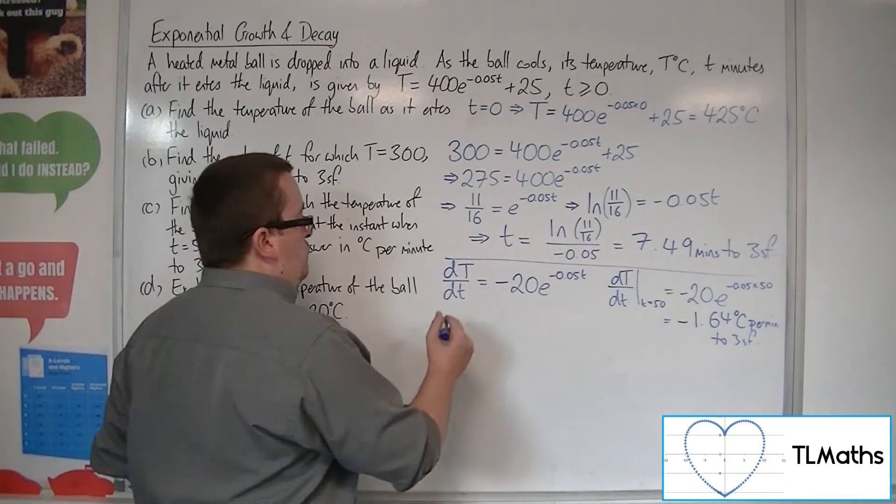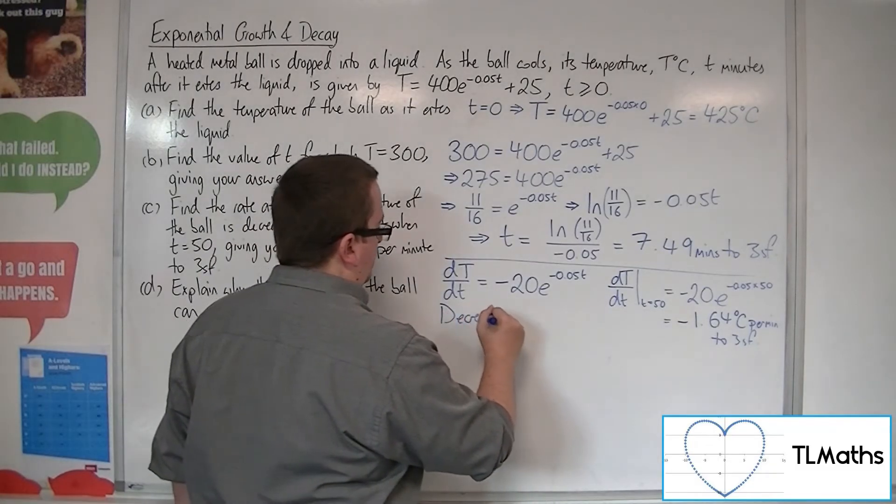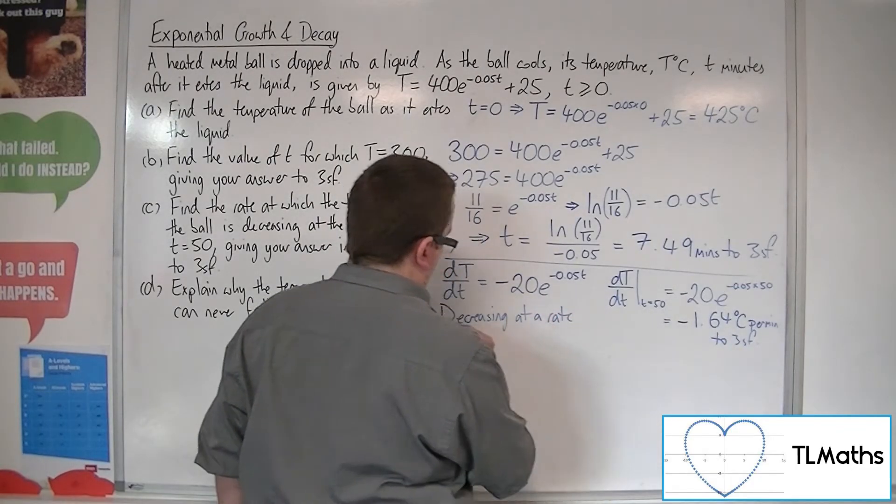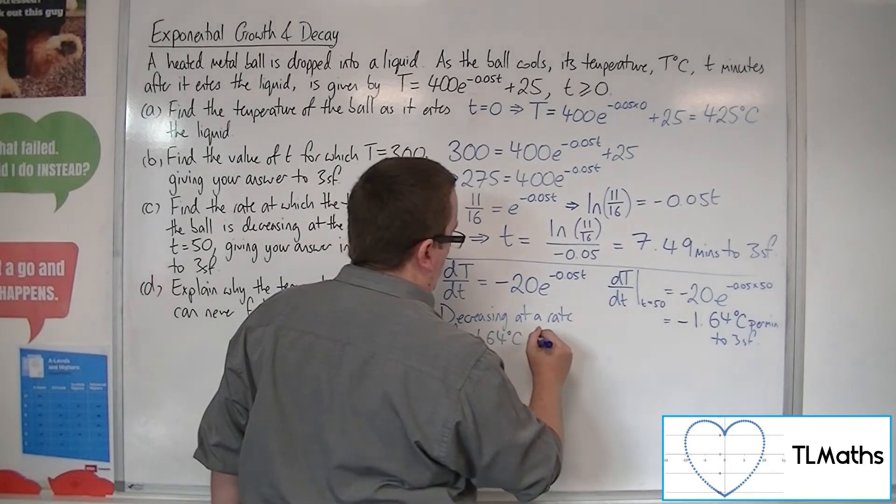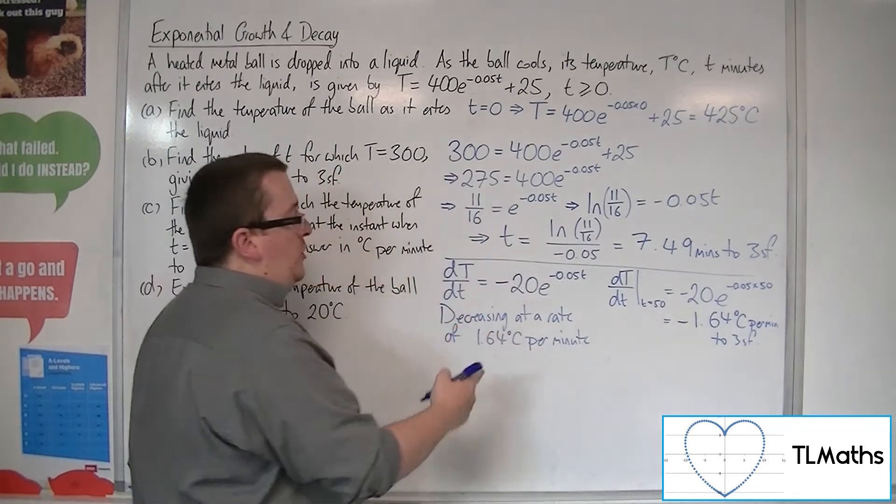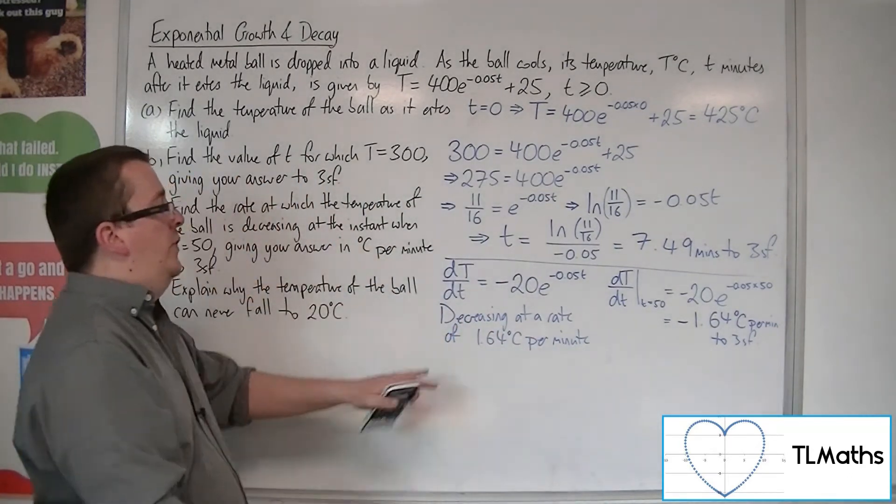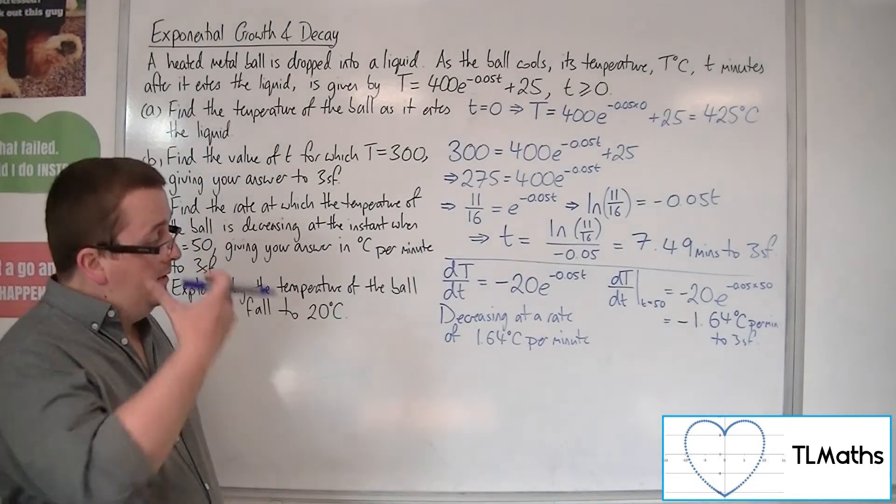And we get minus 1.64 degrees centigrade per minute to 3 sig fig. So, what we really want to write down here is that it's decreasing at a rate of 1.64 degrees centigrade per minute. So, because we've got decreasing there, it's taken to mean we are going down. So, we are subtracting 1.64 degrees centigrade every minute.